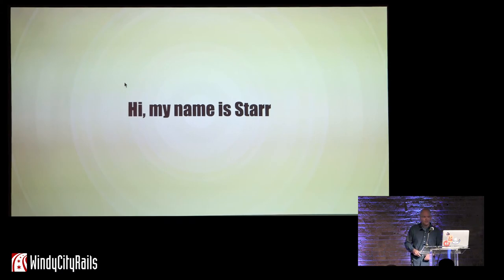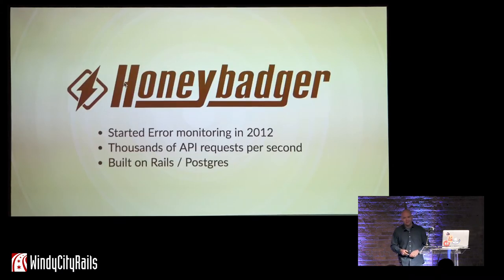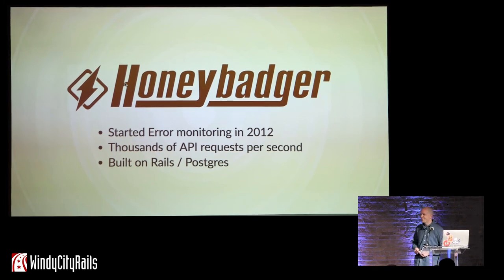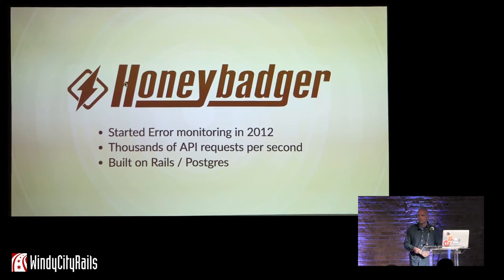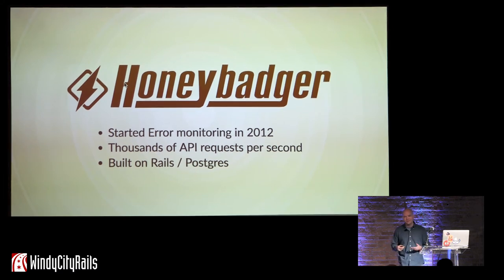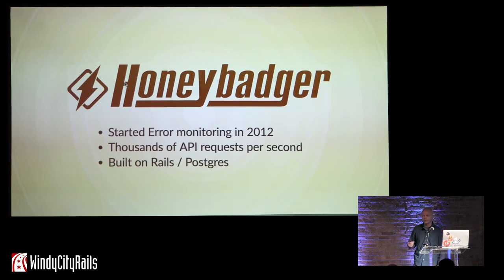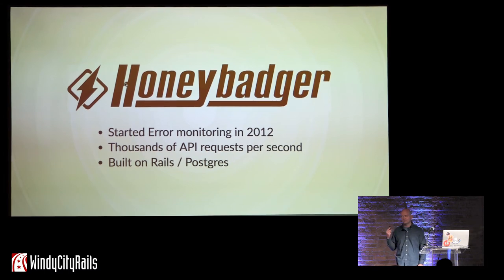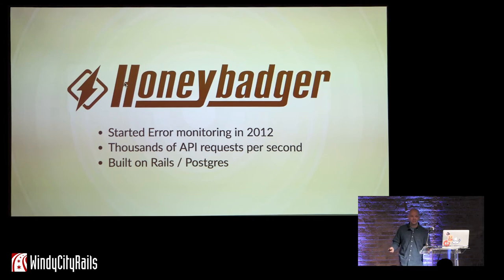My name's Star. I have had lots of database scaling problems, because in 2012, two friends of mine and I started HoneyBadger. If you haven't heard of us, we do exception monitoring for Rails apps, Elixir apps, JavaScript apps, et cetera. And that means we have thousands of errors being reported per second to our service. We have to let people page through errors that have hundreds of thousands of occurrences in them.